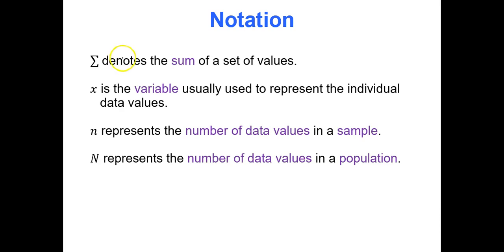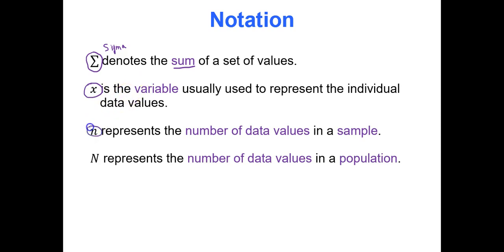Some notation you'll want to know: this squiggly-looking sign is called sigma — it's a Greek letter that means sum, or find the sum of a set of values. We'll use the generic letter x to represent any individual data value. We'll use little n to represent the sample size, and big N to represent the population size.